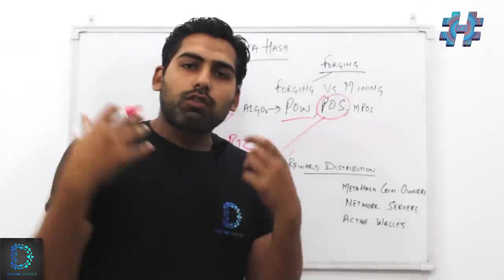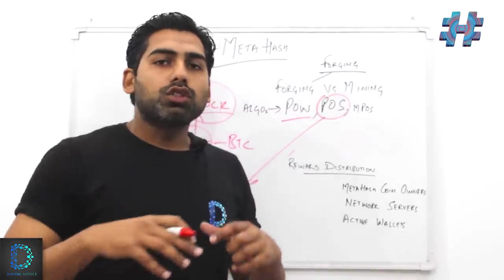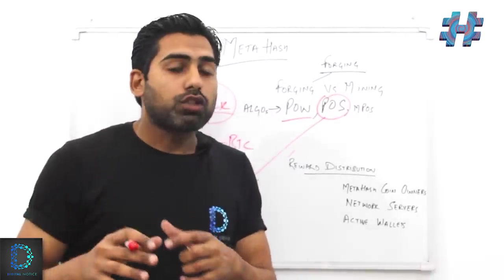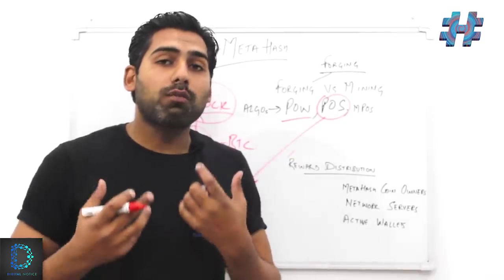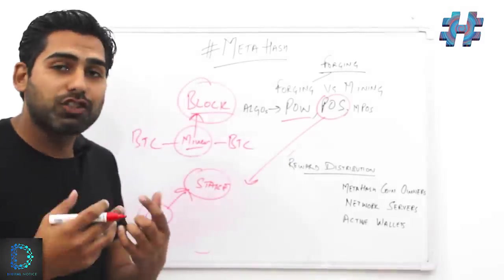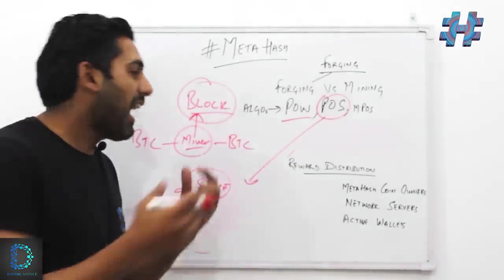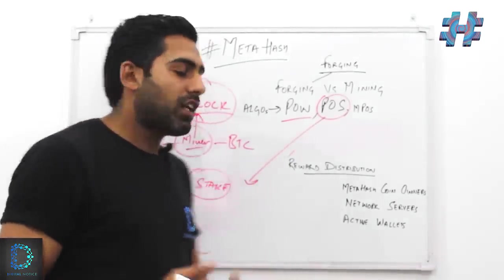Then it was chosen by the network who is going to be the next block generator. So to be a block generator, you need to put some coins on the stake. The more number of coins you put on the stake, the more are the chances that you will be chosen by the network as a block generator.